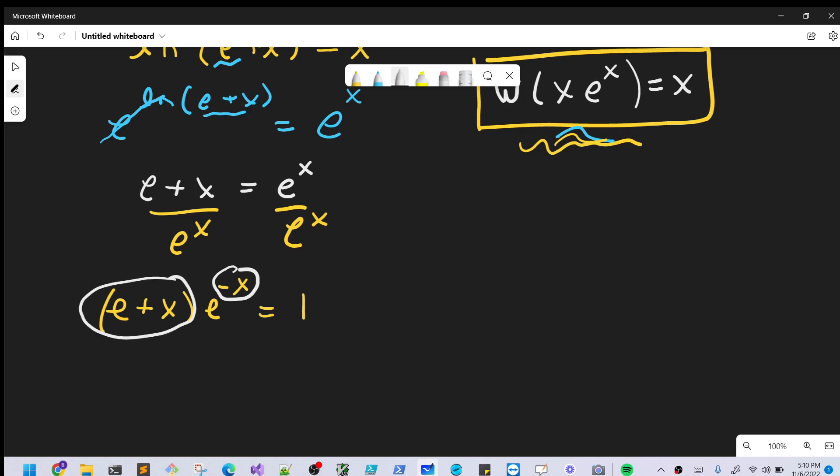But what we can do, now notice, what if I did this, we need to get this e in here, which is tricky, but what if I divide by e^e. We've got to do it on the right side too.